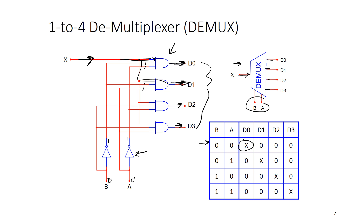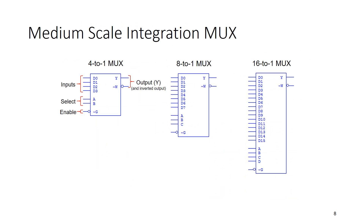If I have 16 outputs — two to the fourth — I will need four different input selectors. In binary, to get 16 possible values I need four bits, going from 0000 to 1111, which is zero to 15 — that's 16 possible combinations.